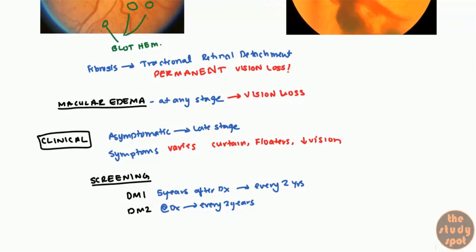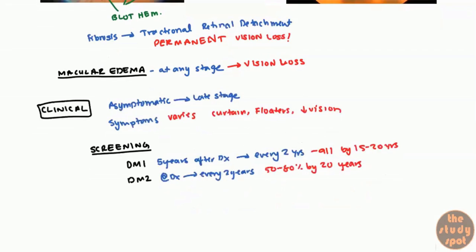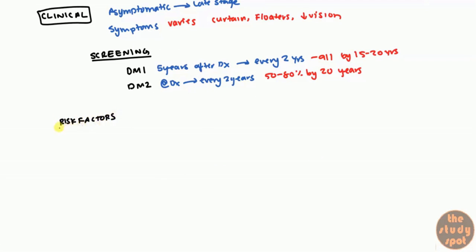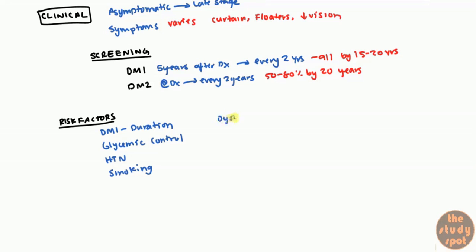In diabetes type 1, almost all patients by 20 years start having some form of changes in the retina — so it's almost ubiquitous. With diabetes type 2, anywhere between 50 to 80% will start to have changes by 20 years. So diabetes type 1 tends to be more severe when it comes to retinopathy. Risk factors that can worsen retinopathy include diabetes type 1 and duration, poor glycemic control (good glycemic control decreases your risk), hypertension, and smoking.